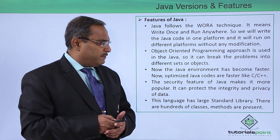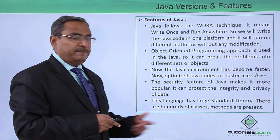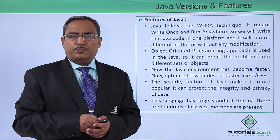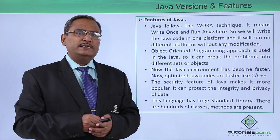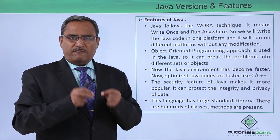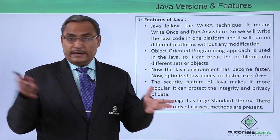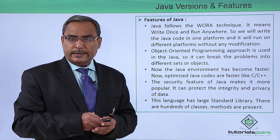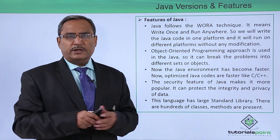The security features of Java make it more popular, as it can protect the integrity and privacy of data. That is why Java does not support the pointer concept — it supports the reference concept instead. In C and C++, a variable can access a value from a different memory location using pointers, which is a security risk, but this problem has been resolved in Java.